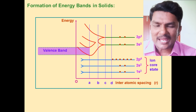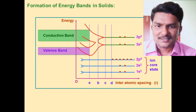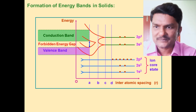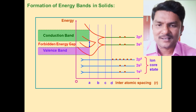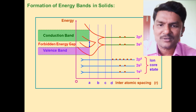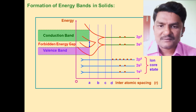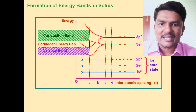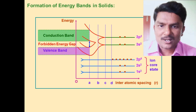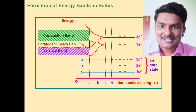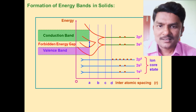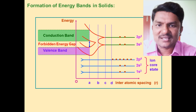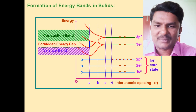In solids, atoms are closely packed — the distance between atoms is very, very small. So there is the possibility of overlapping of energy levels of the outermost shells of one atom with another. Because of that overlapping, energy bands can form. Note: an isolated atom has discrete energy levels. When atoms come closer, there is strong interaction and because of that the energy levels overlap, forming energy bands.